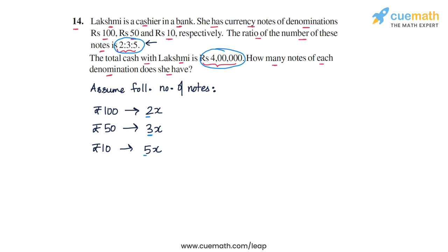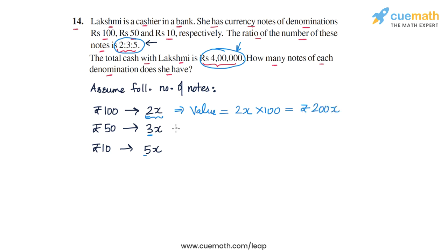Now the other piece of information we have to use is that the total value of these notes is rupees 4 lakhs. There are 2x notes of rupees 100, so the total value of these 2x notes will be 2x × 100, or rupees 200x. Similarly, there are 3x notes of rupees 50, so the total value will be 3x × 50, or rupees 150x.